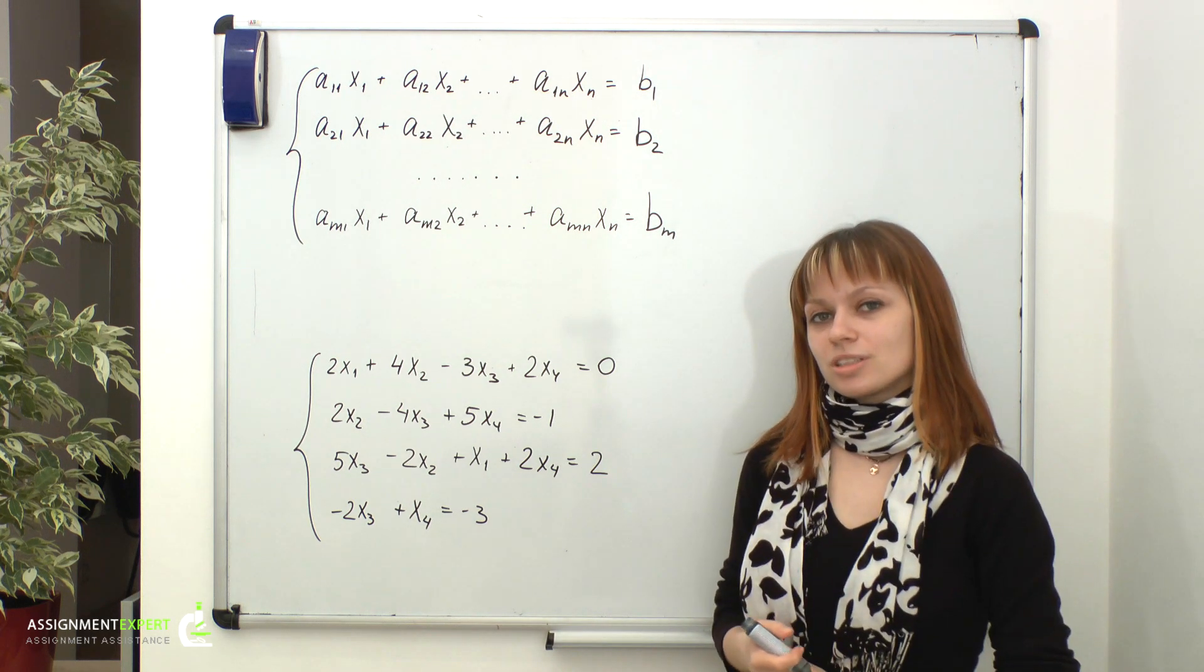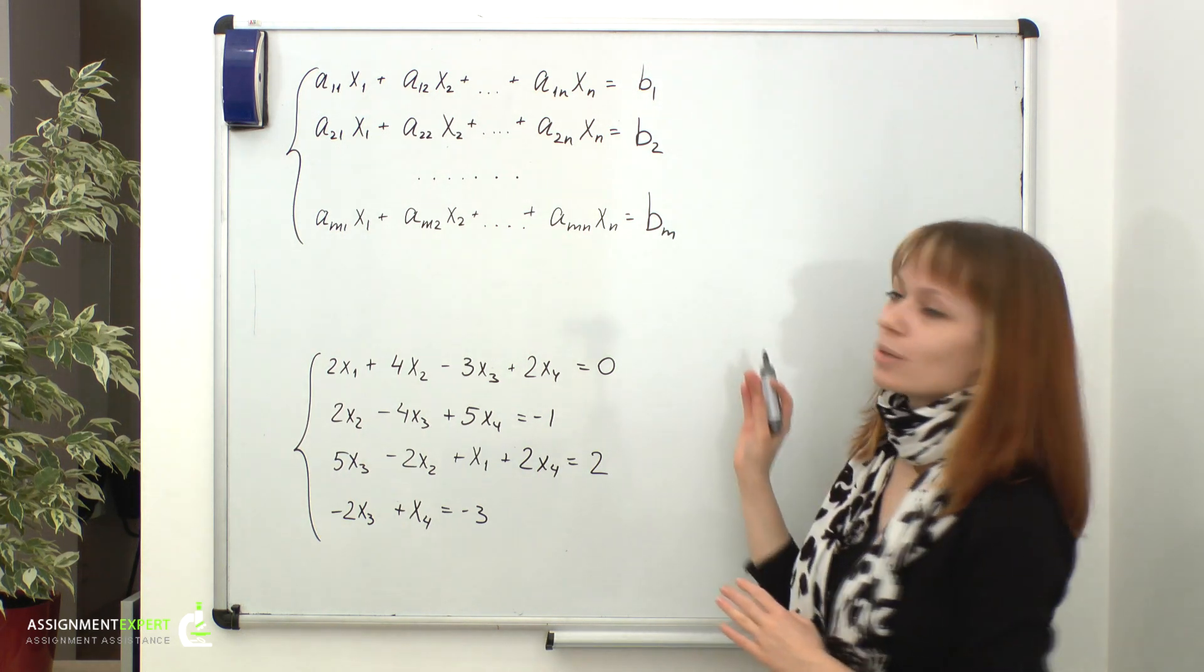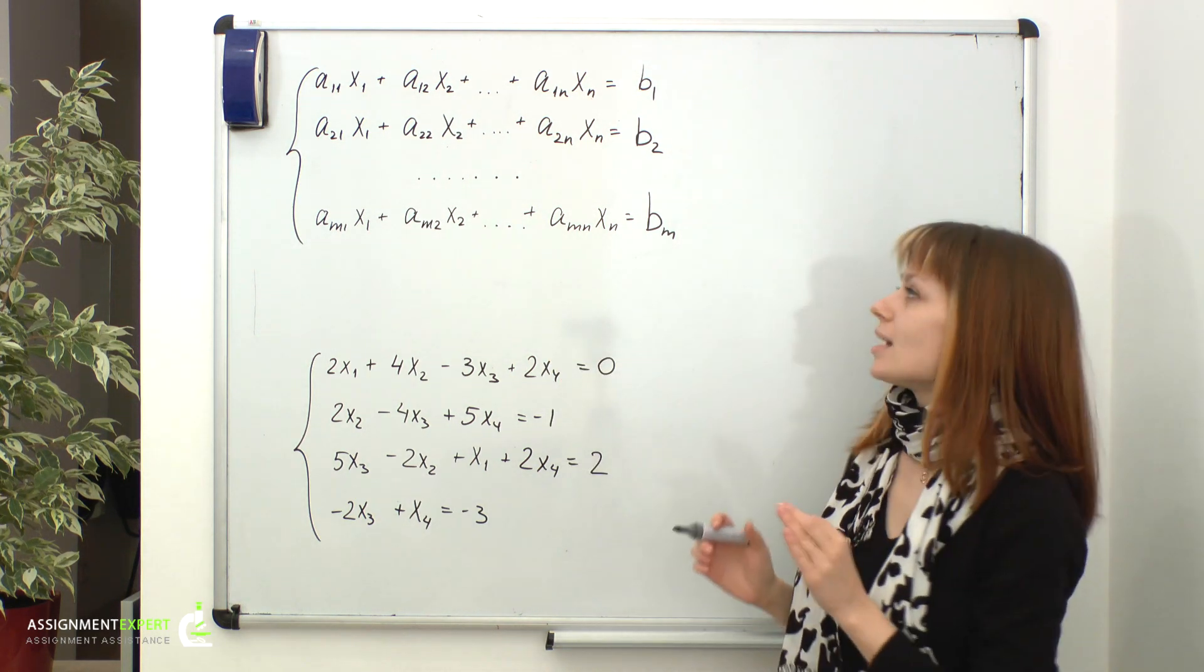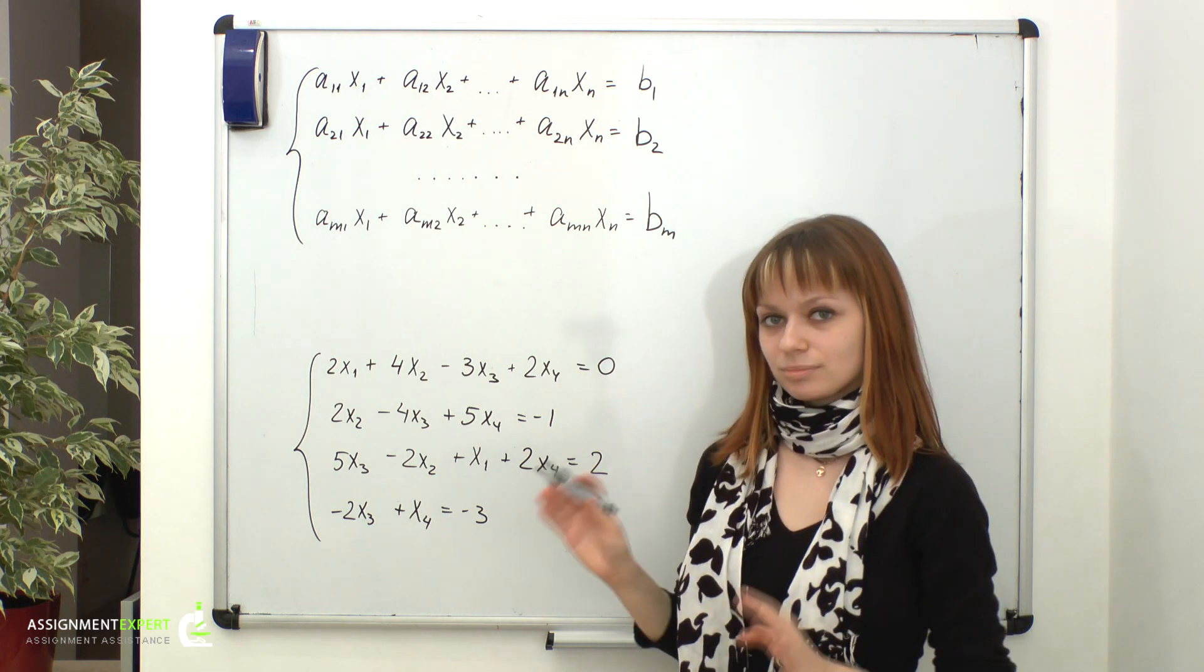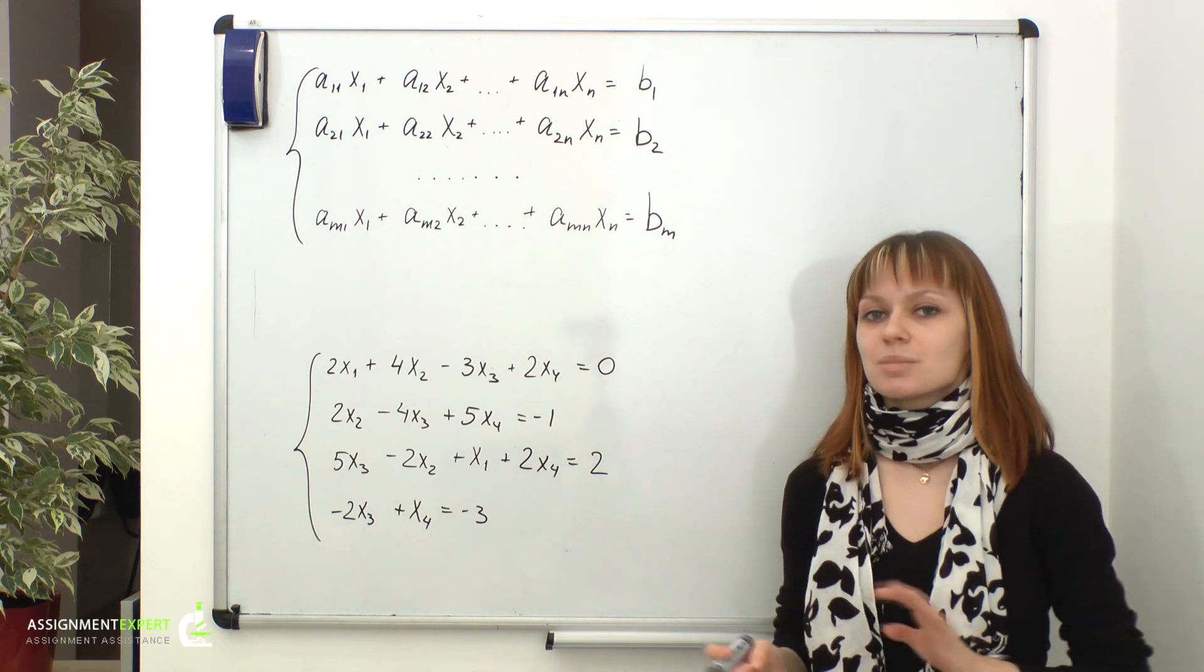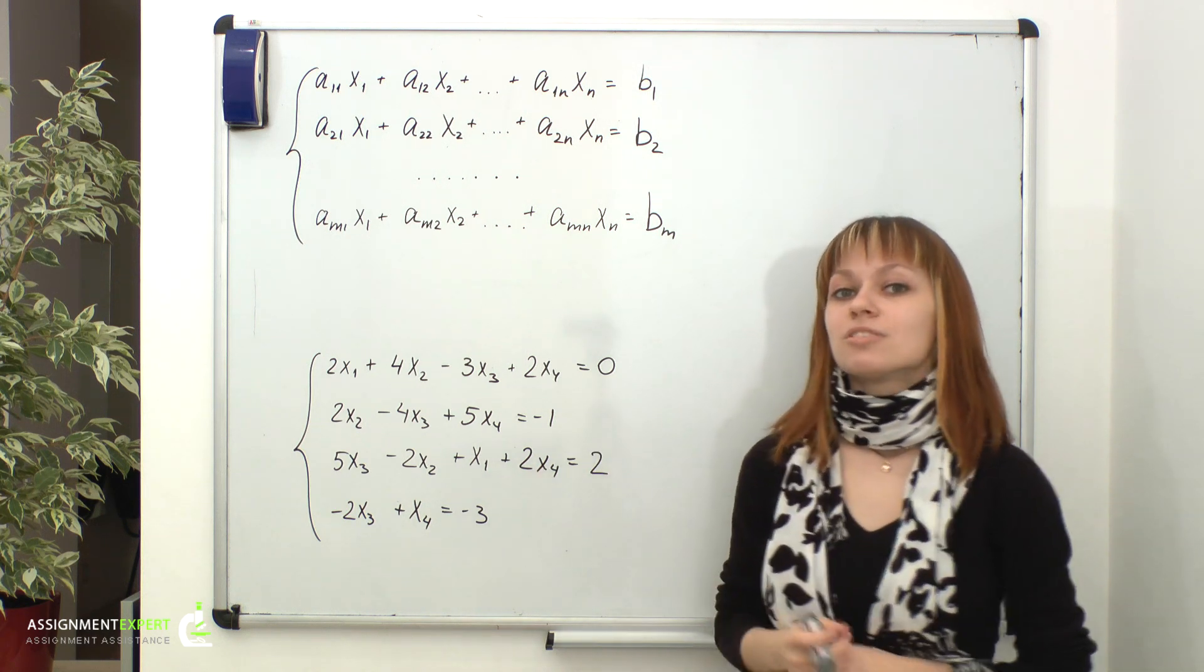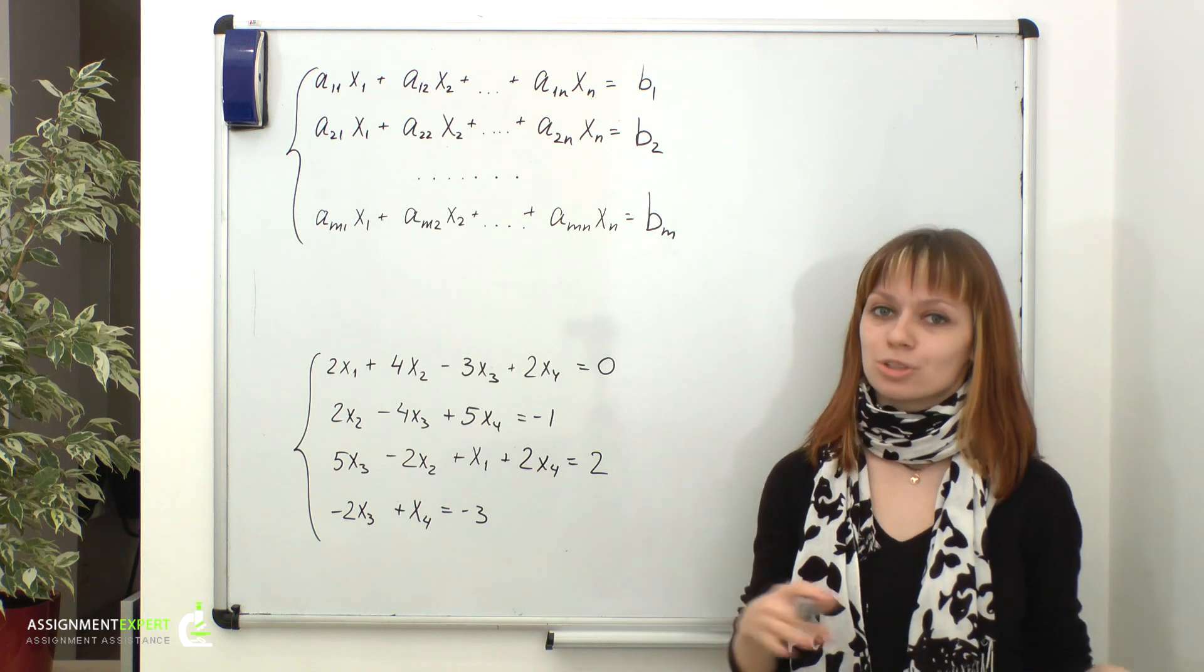Another simple conclusion that comes to mind is that we can multiply both sides of any of the equations by any non-zero constant. And that won't affect the system. As well as adding to both sides of any of the equations corresponding sides of any other equation. And we can perform these elementary transformations as many times as we want. That will lead us to an equivalent system, because in fact doing so we're not producing or reducing information, but just reorganizing it.